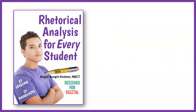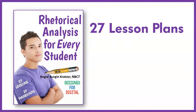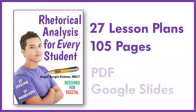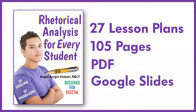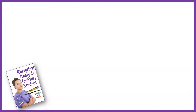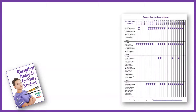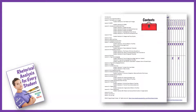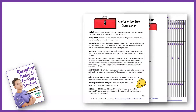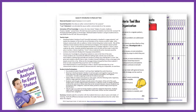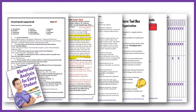Rhetorical Analysis for Every Student includes 27 lesson plans within a 105-page PDF. Google Slides are provided as well. The teacher gets an alignment document for Common Core, a detailed table of contents, student handouts corresponding with the lesson plans, and explicit teacher notes and answer keys.